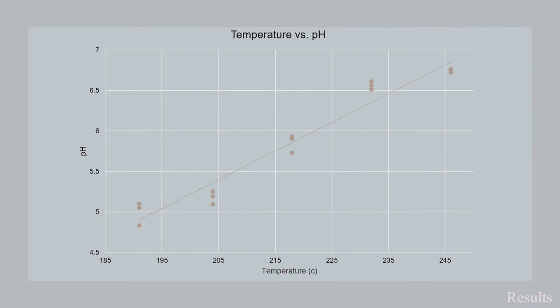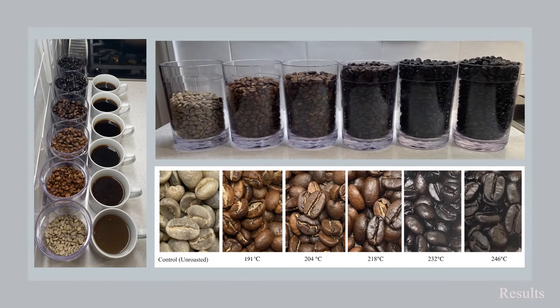This graph illustrates that as temperature increased, the pH also increased and achieved a more neutral pH, almost to 7. These pictures show the apparent color change between bean color and brew color. The top picture also shows that as the temperature increased, the mass decreased, but the volume increased.